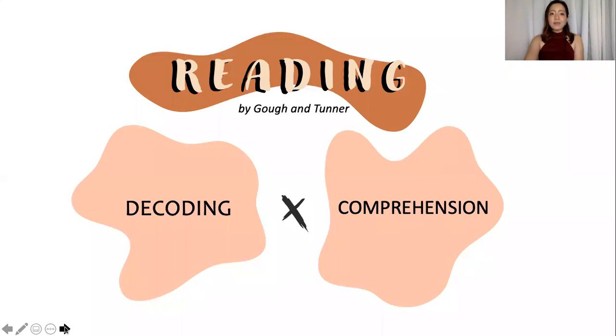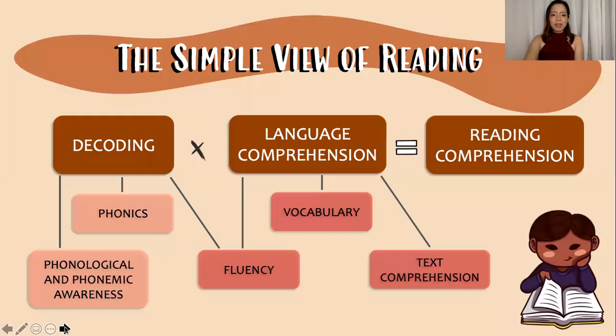Aside from the functional nature of reading, reading, according to Gough and Tunmer, is the product of two things, decoding and comprehension. Decoding, comprehension, what are those? To understand this formula better, let's take a look at each of the components.